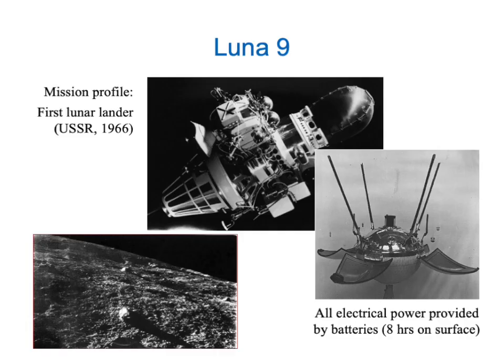Let's look at some notable examples. Our first example is the 1966 Soviet spacecraft Luna 9, which was the first spacecraft to make a soft landing on the lunar surface. It had neither solar cells nor a radiothermal generator — it just had batteries. And so it only operated for about eight hours on the surface. But during that time, it gave us our first look at what the lunar surface was like.